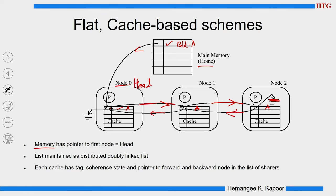The memory does not store the full sharer information - it only stores a pointer to the head node. The linked list is maintained in a distributed fashion, because node 0, node 1, and node 2 are at disjoint positions in the system. Each cache block has its own tag and coherent state for coherence protocols, but additionally needs two pointers - forward and backward pointers - to maintain this distributed doubly linked list.